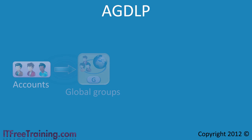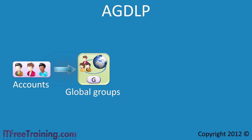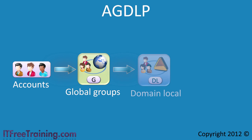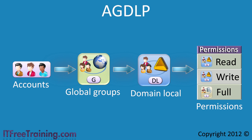AGDLP works like this: Accounts go into global groups, which go into domain local groups, which get applied to permissions. Let's start with the resource we want to allow access to and work our way back and see why each group is used.